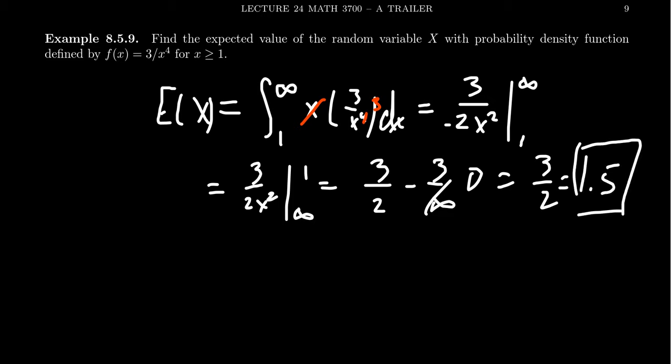I haven't given you any physical interpretation of what this model is measuring. But what we can see is that X will randomly be assigned any number from 1 to infinity. If I had to guess, I would expect it to be 1.5. That's the middle of this distribution.